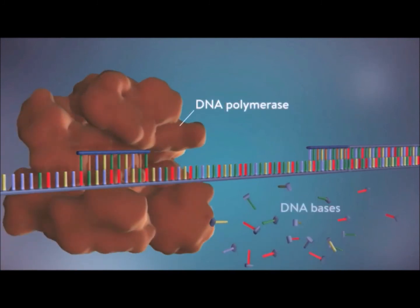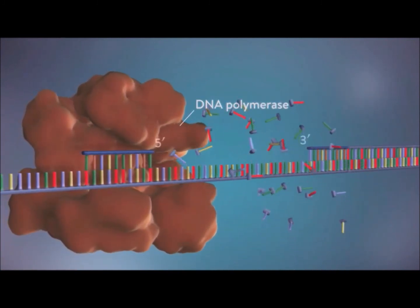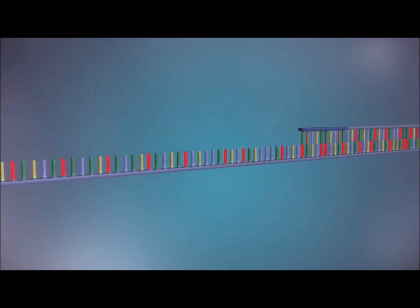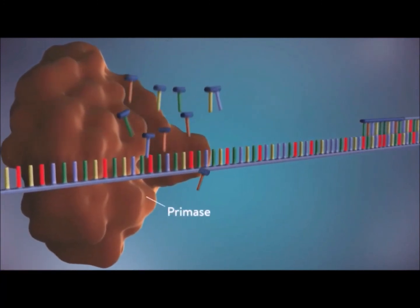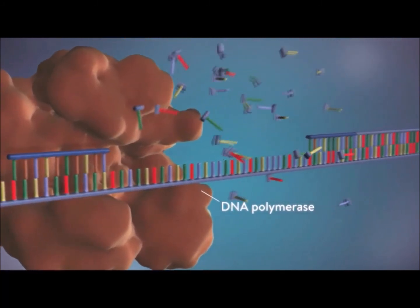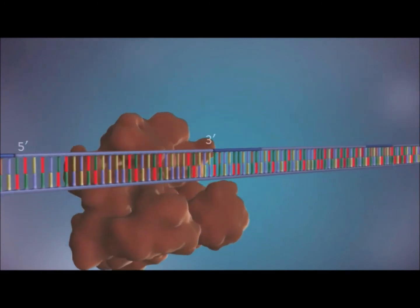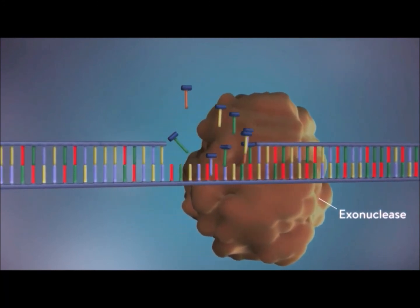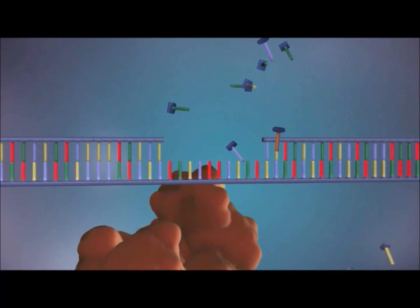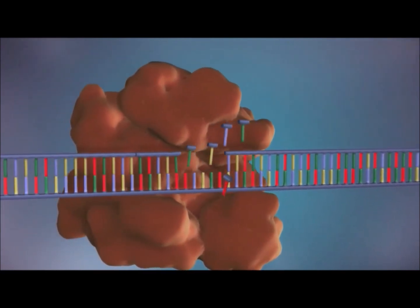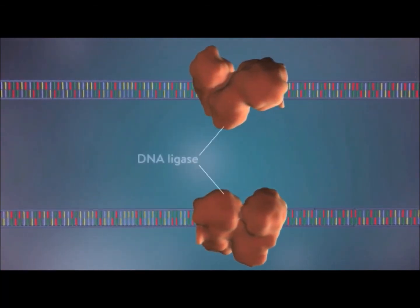DNA polymerase binds to it and starts to synthesize DNA bases, continuing to synthesize the newly synthesized DNA strand in the 5' to 3' direction. Finally, exonuclease removes the RNA primer, and DNA polymerase synthesizes the DNA strand in place of the RNA primer. Then DNA ligase completely seals the strand.